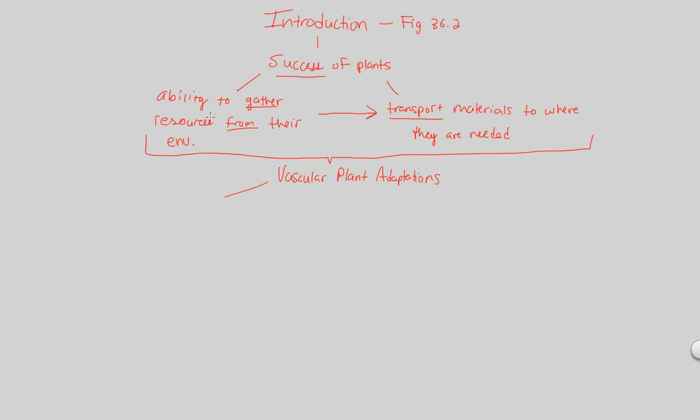First and foremost the idea of this ability to gather resources from their environment can simply be stated as acquisition. Vascular plants have an adaptive capability of acquiring things very well from their environment. Acquisition in a nutshell.